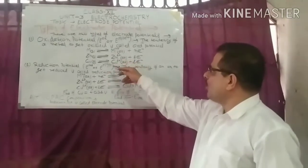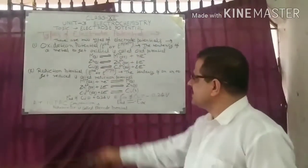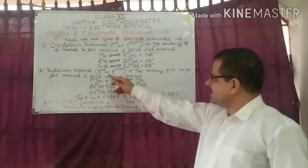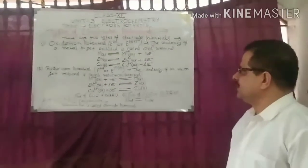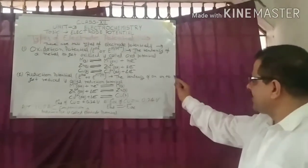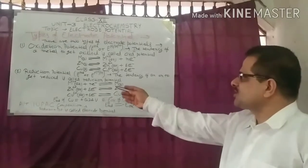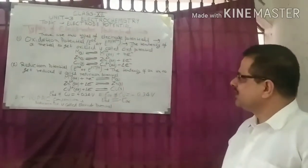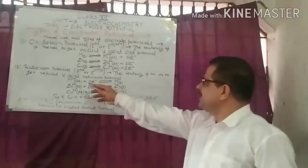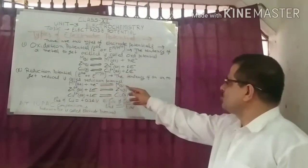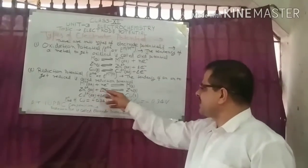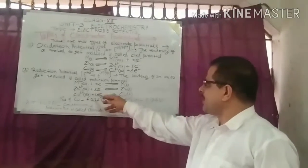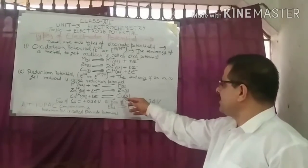Next is reduction potential, represented by E(red), where Red stands for reduction. The tendency of an ion to get reduced — that is, the tendency of a metal ion to accept electrons — is called reduction potential. For example, a metal ion by accepting electrons is converted into solid metal. Zn²⁺ by accepting 2 electrons is converted into zinc solid metal; cupric ion by accepting 2 electrons is converted into copper metal.